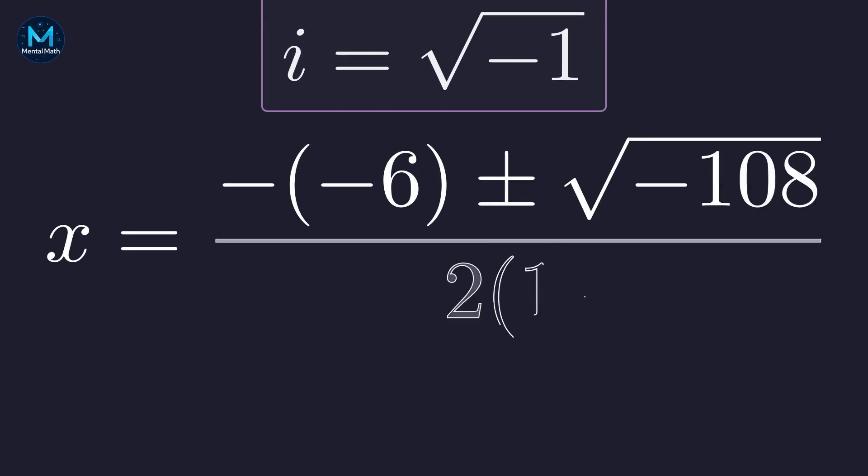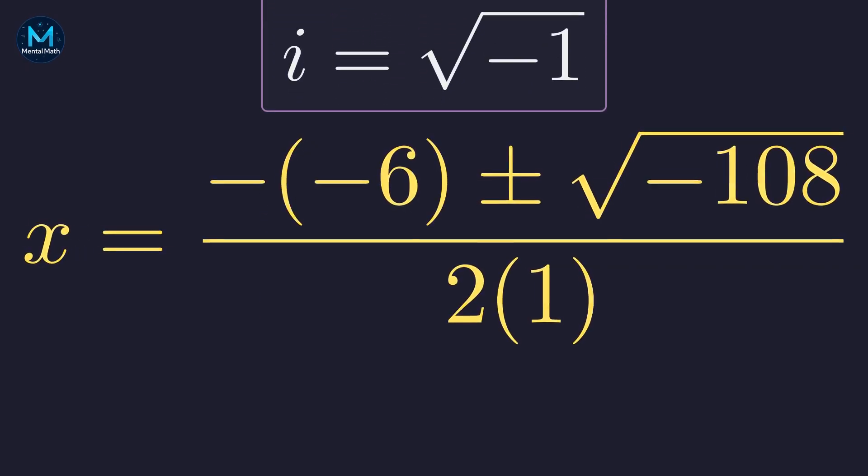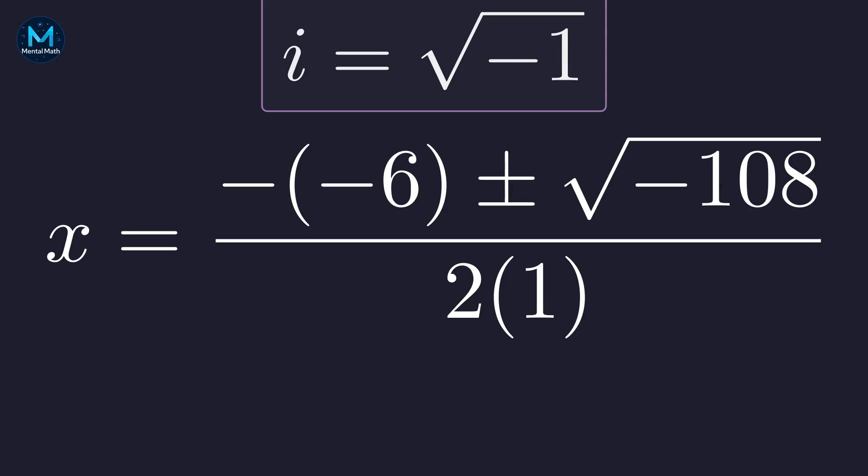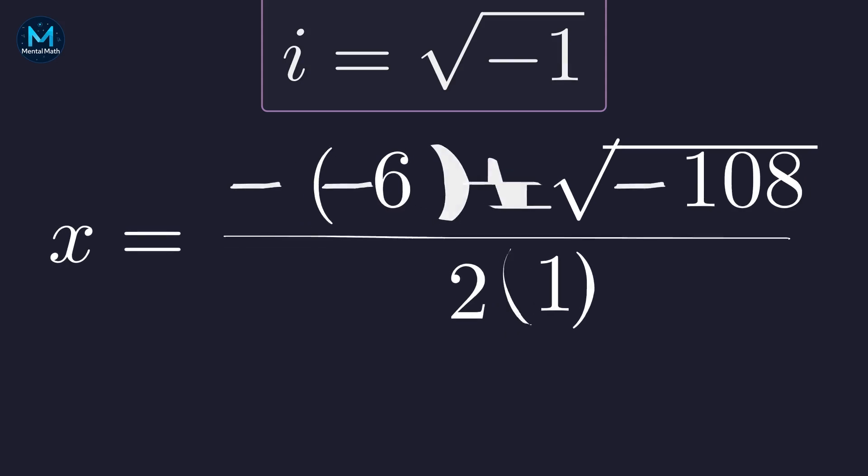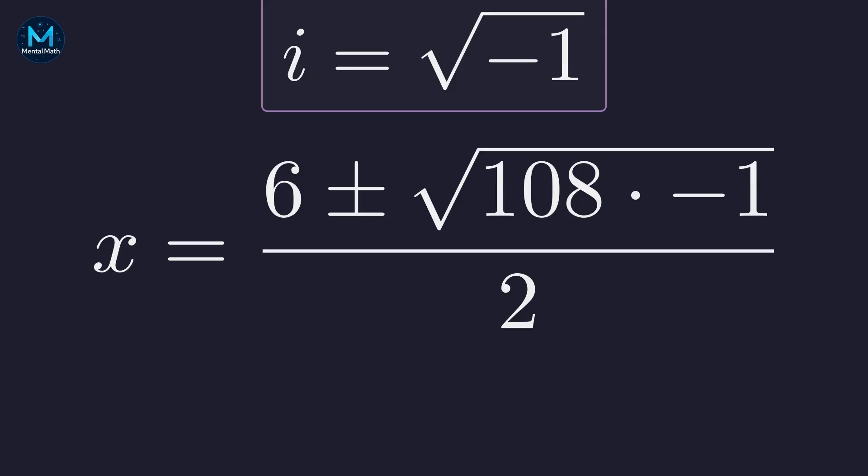Let's use the quadratic formula with our coefficients. The key is simplifying the square root of negative 108. We can split this as the square root of 108 times the square root of negative 1. Now to simplify the square root of 108, we look for perfect square factors.